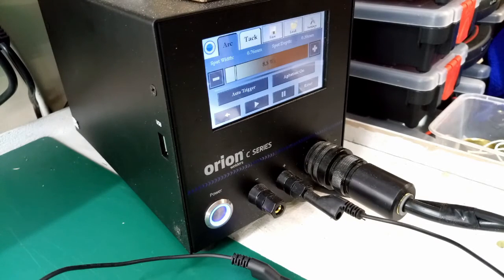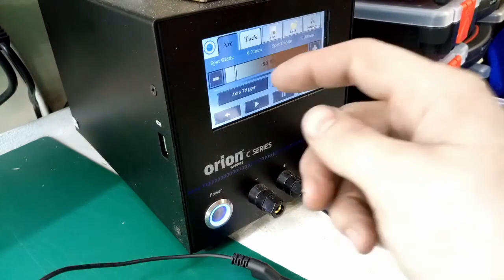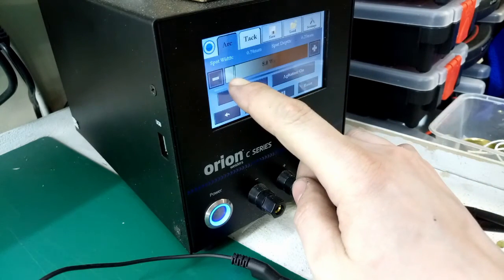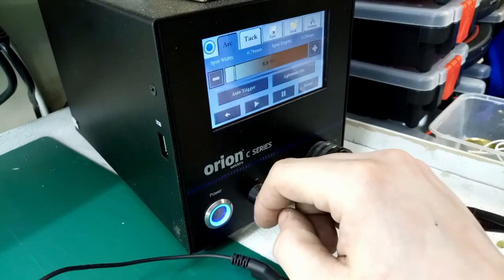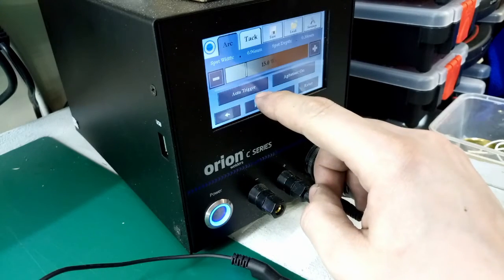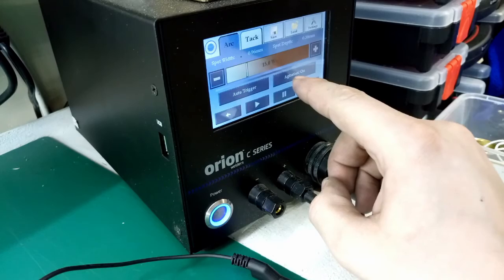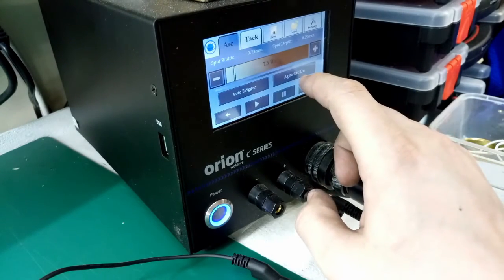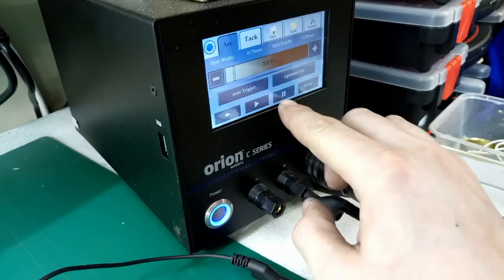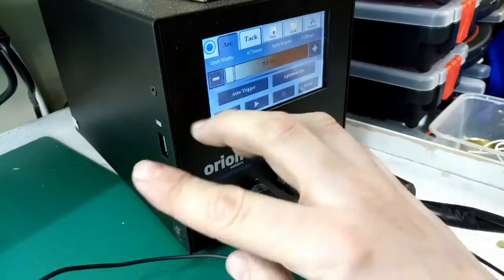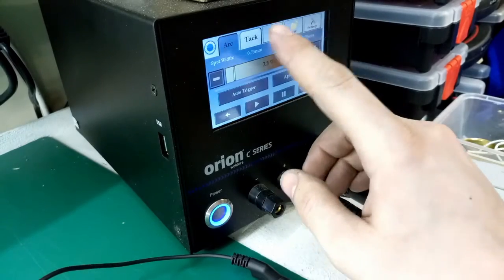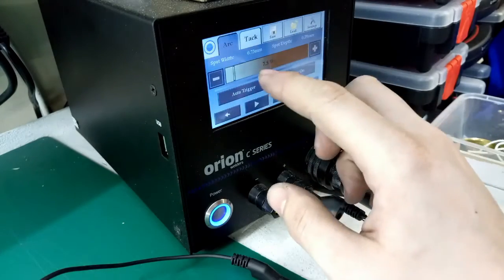So this is the Orion 100c microwelder. It's all touch screen, so this controls how much power you're putting through the workpiece. I tend to start nice and low. We want auto trigger on because I don't use the foot pedal. Agitation I tend to leave on for working with steel. You have to press play. You can pause it and then nothing will work, or you have to press play for it to start. You can load and save settings and so on, but there's not really much need to do that.